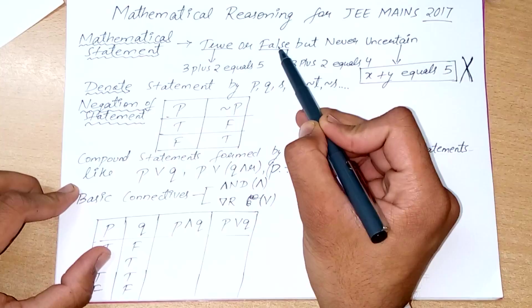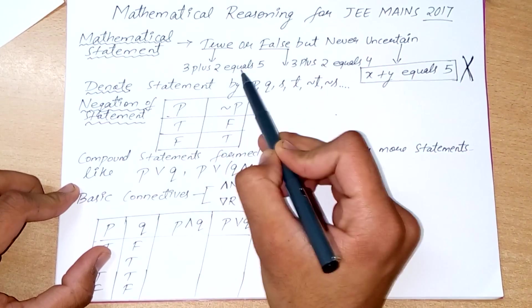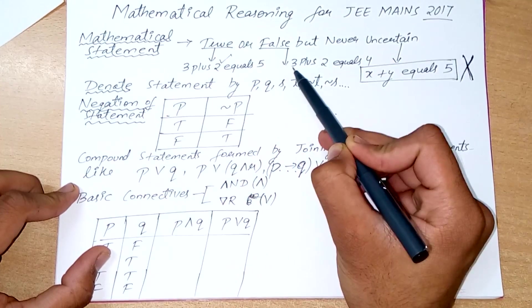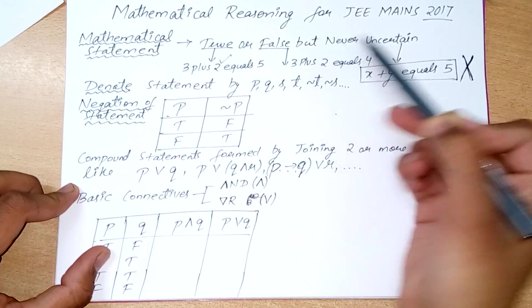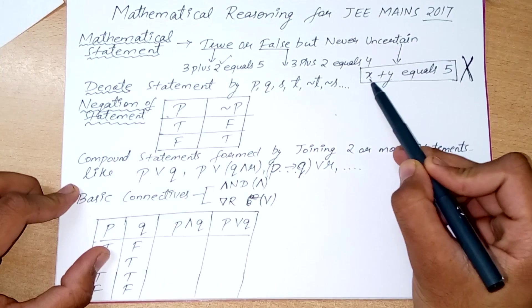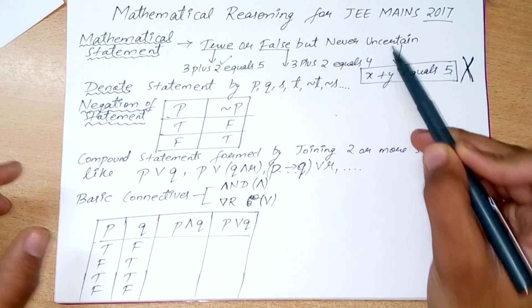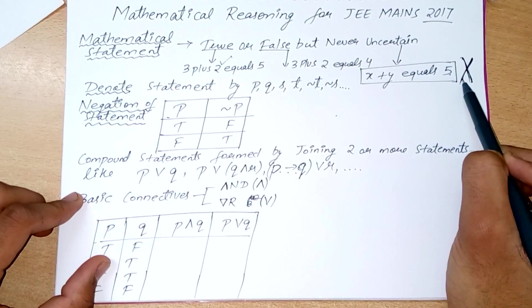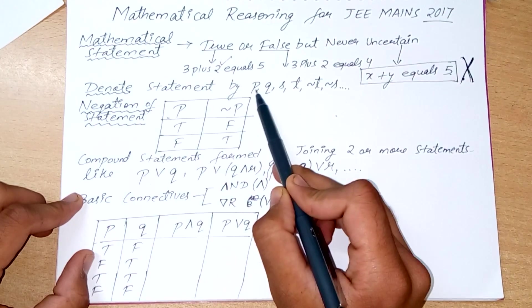A mathematical statement can be either true or false but never uncertain. For example, 3 plus 2 equals 5 is a true statement, and 3 plus 2 equals 4 is a false statement. But x plus y equals 5 is uncertain — we don't know if it's true or false — so this is not a mathematical statement.